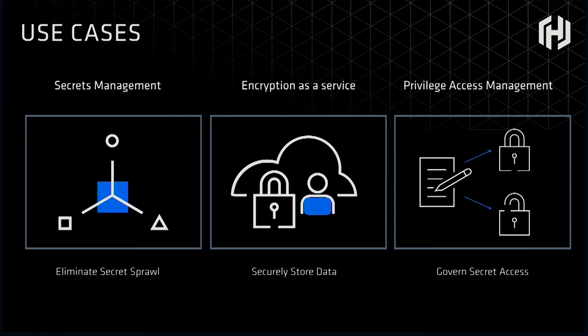The last one has to do more with human operators. How do we get access to the credentials we need to do database maintenance or inspect something in the AWS console when that information should be privileged and protected? Highly related to the first problem, but more of a manual access path as opposed to a programmatic one.